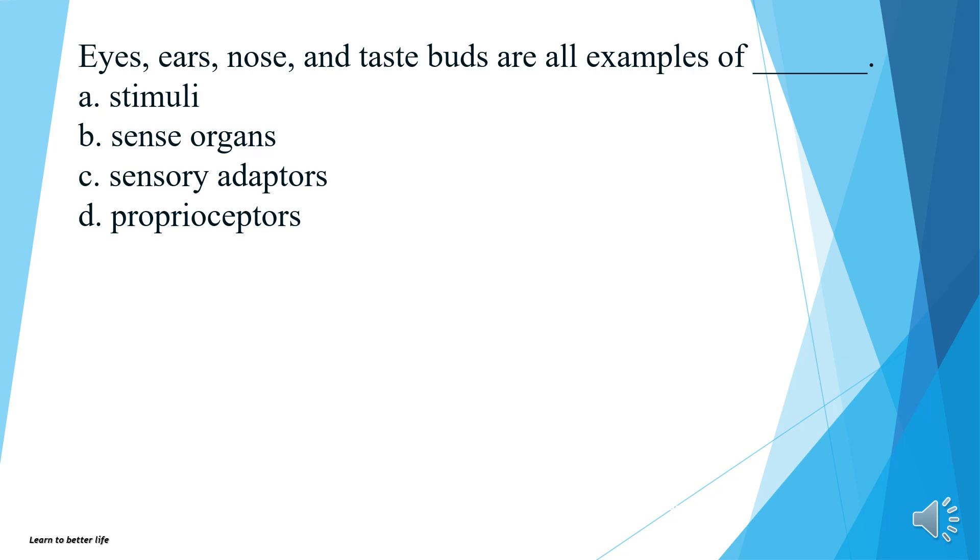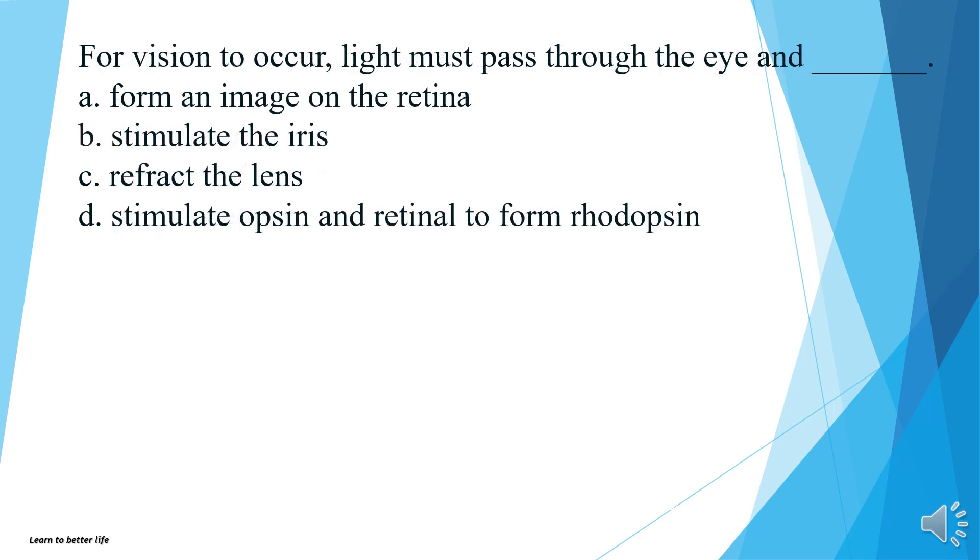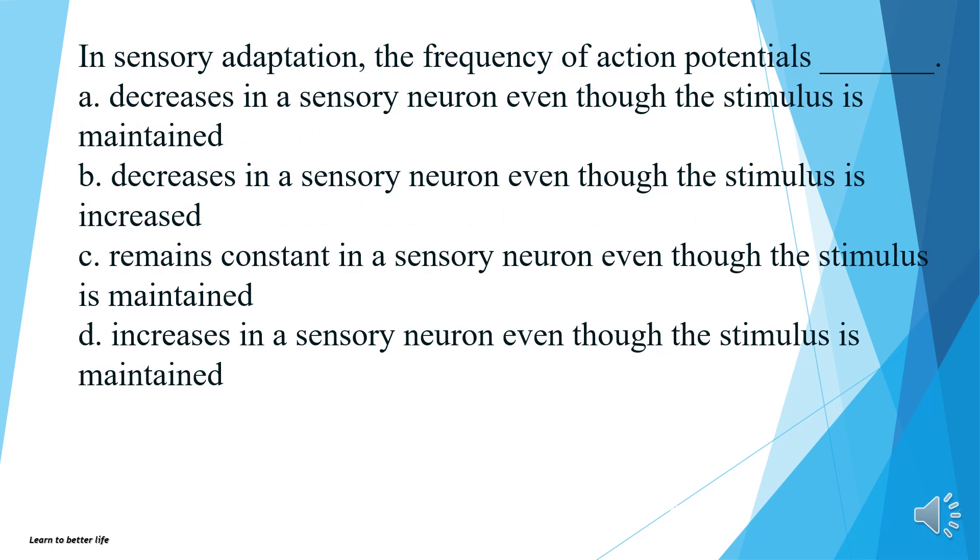Eyes, ears, nose and taste buds are all examples of what? Stimuli, sense organs, sensory adapters, or proprioceptors? The answer is B, sense organs. For vision to occur, light must pass through the eye and form an image on the retina, stimulate the iris, refract the lens, or stimulate opsin and retinal to form rhodopsin? The answer is A, form an image on the retina. In sensory adaptation, the frequency of action potentials decreases in a sensory neuron even though the stimulus is maintained, decreases even though the stimulus is increased, remains constant even though the stimulus is maintained, or increases even though the stimulus is maintained? The answer is A, decreases in a sensory neuron even though the stimulus is maintained.